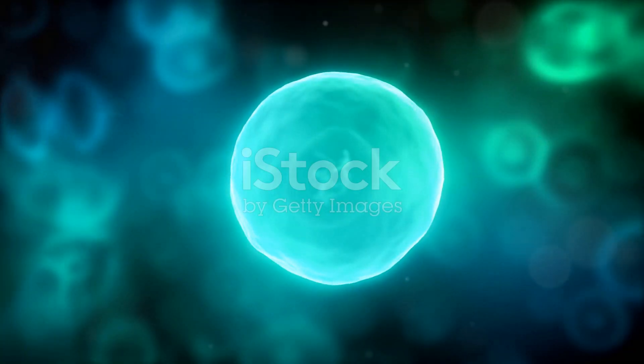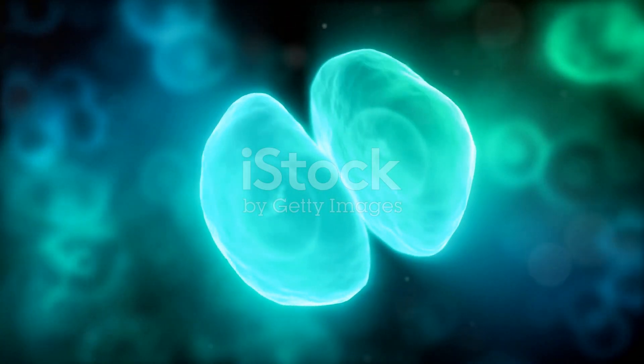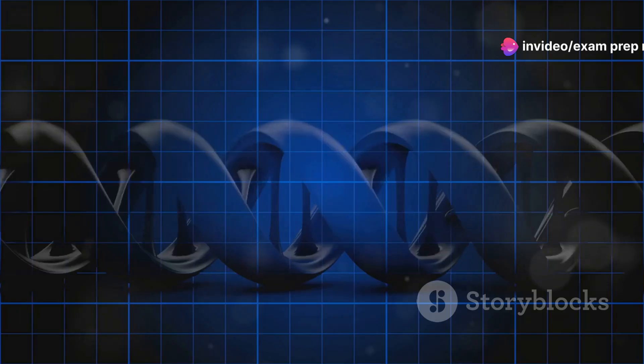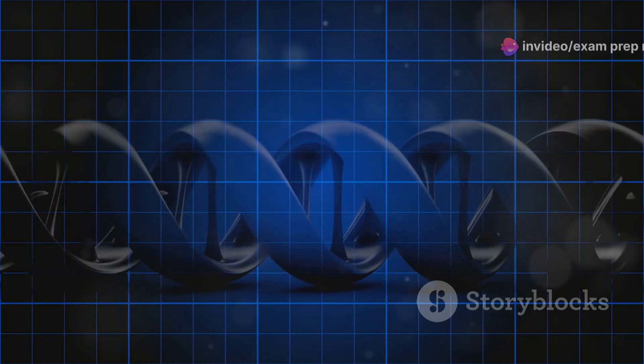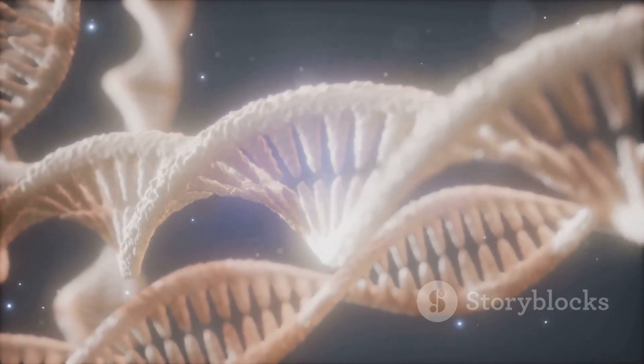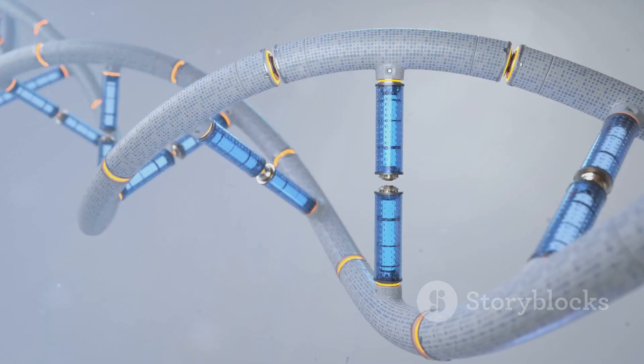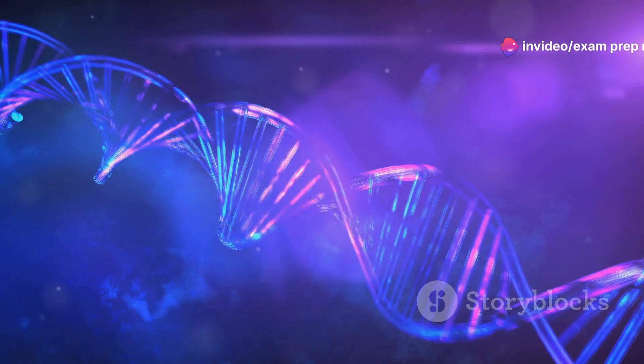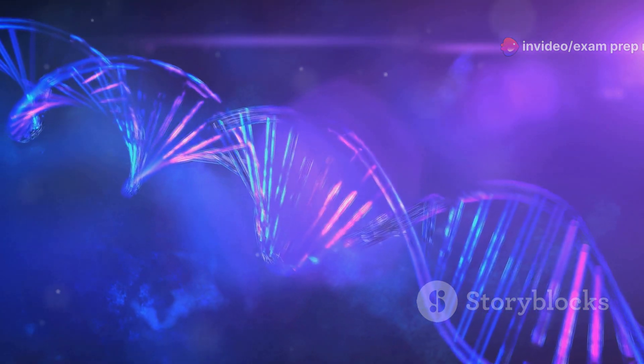This process, called DNA replication, ensures that every time a cell divides, each new daughter cell receives an identical copy of the genetic blueprint. It's like making a perfect photocopy of a blueprint before sharing it with a friend. Imagine the DNA double helix unwinding like a zipper, separating the two strands. Each strand then serves as a template for building a new complementary strand.